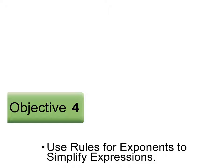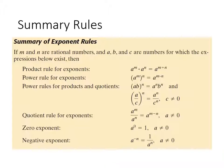We stopped last Saturday on using rules for exponents to simplify expressions, so let's go back over them. First is our product rule: if you're multiplying variables with the same base but different exponents, you add the exponents together. For example, two to the third times two to the fourth becomes two to the three-plus-four power, which is two to the seventh power.